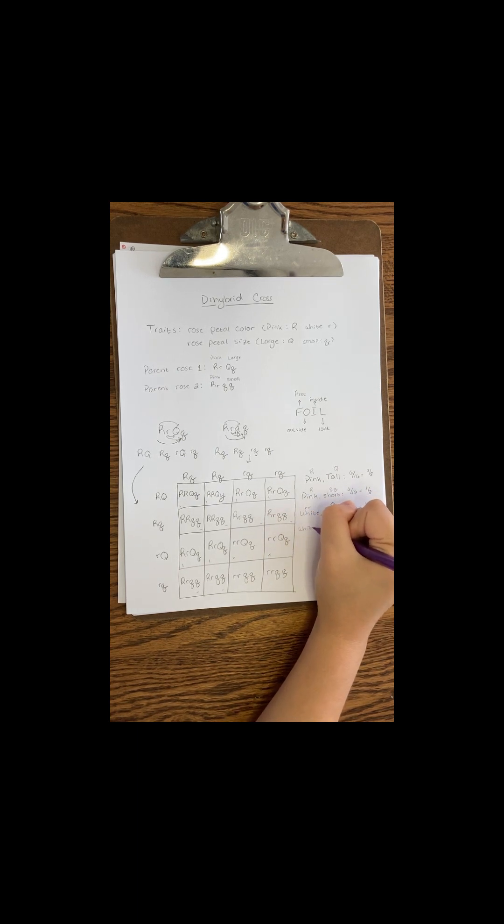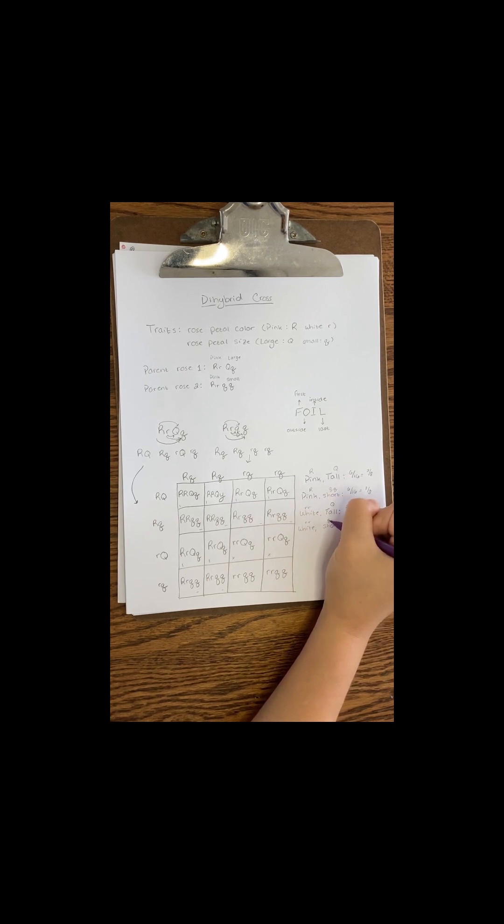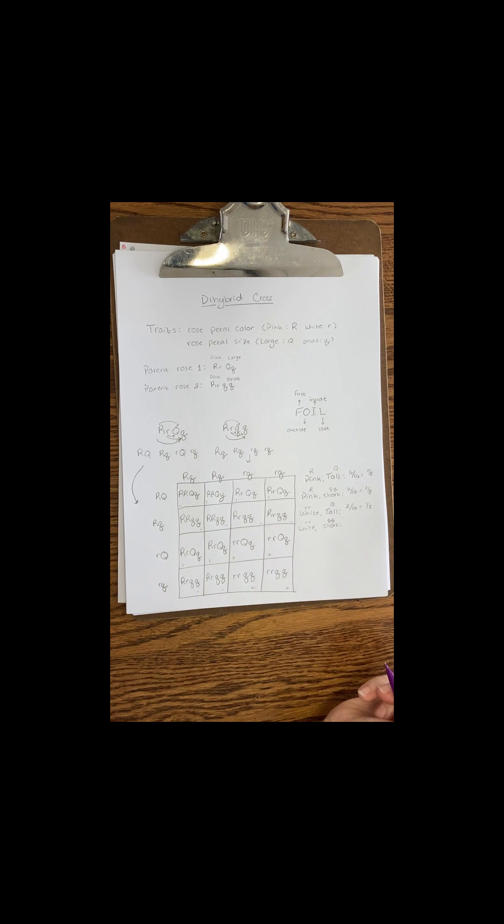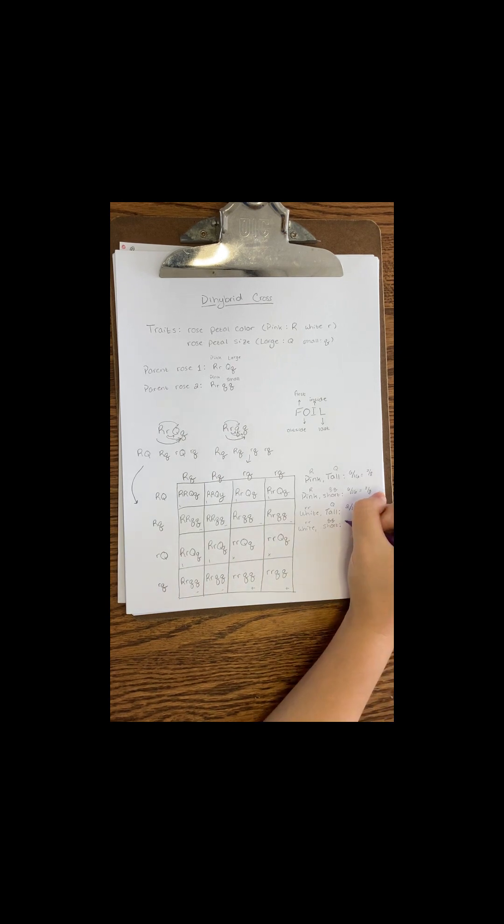Finally, let's look at white petals that are small. Here we are looking for boxes with all lowercase letters, since both of these traits are recessive. Again, I'm only going to find two out of my 16 boxes that fit this criteria, which reduces to 1 eighth of the offspring.